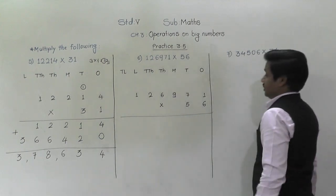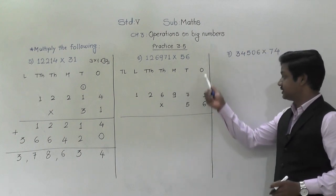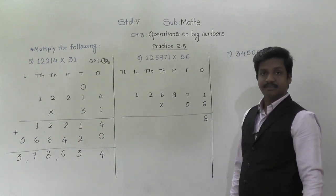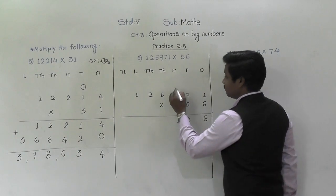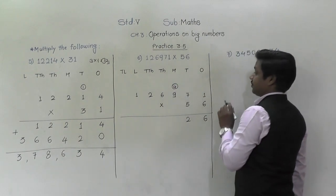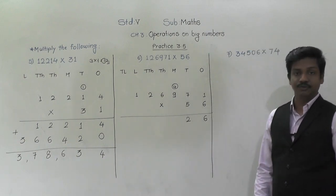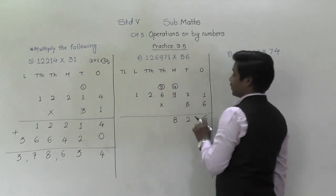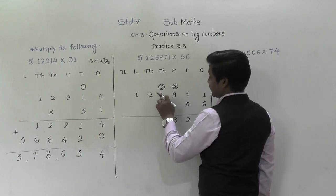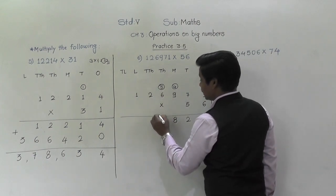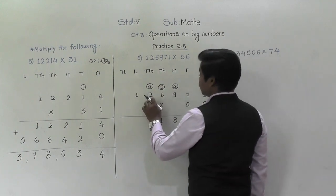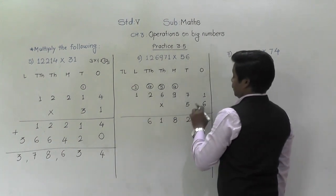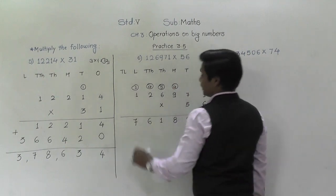First, we will multiply by six, the digit at ones place. Six ones are six. Six sevens are forty-two — two will come down, four will be carried. Six nines are fifty-four. Fifty-four plus four is fifty-eight — eight will come down, five will be carried. Six sixes are thirty-six. Thirty-six plus five is forty-one — one will come down, four will be carried.